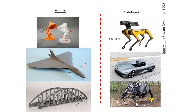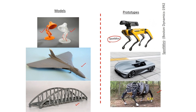As far as prototypes are concerned, you can see a robot — the very famous SpotMini. This is the prototype of the desired final product. It has all the functions and performs all the activities of the final product. A few more examples are shown: an automotive and one more robot.